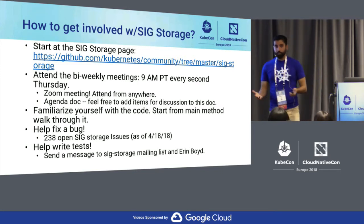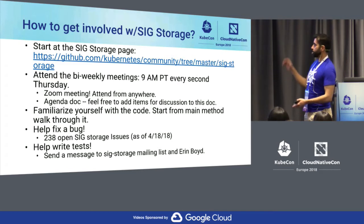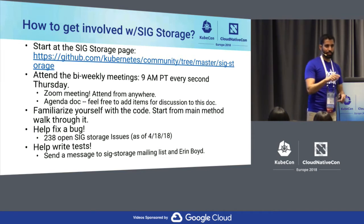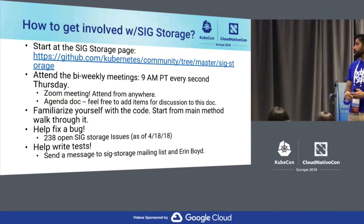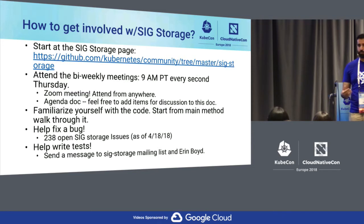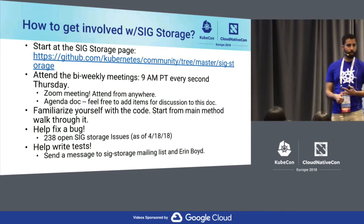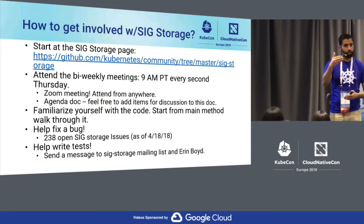So next up is how do you get involved with the storage SIG? Go to the homepage — that's the place that you start. Next up, start attending the biweekly meetings — biweekly here means every two weeks, not twice a week. Every two weeks we hold a meeting at 9 a.m. Pacific time on Zoom. There is an agenda doc linked on that page. Feel free to add items to it — if you have a PR that's not getting the attention it deserves, a design you want to discuss, pretty much anything. Don't hesitate to modify that doc and just add an item to the next meeting.